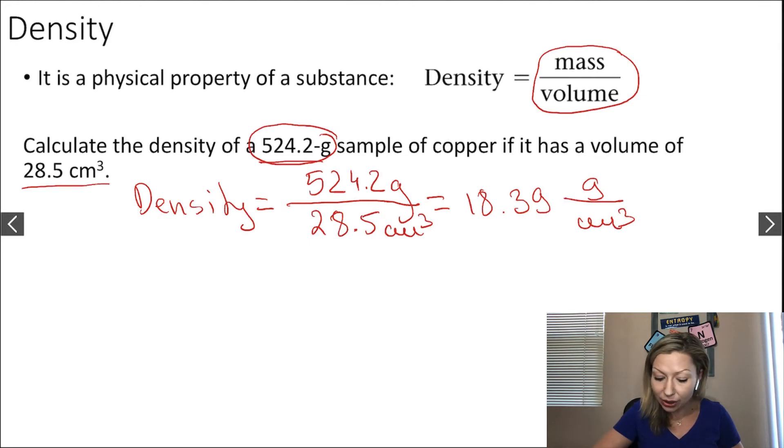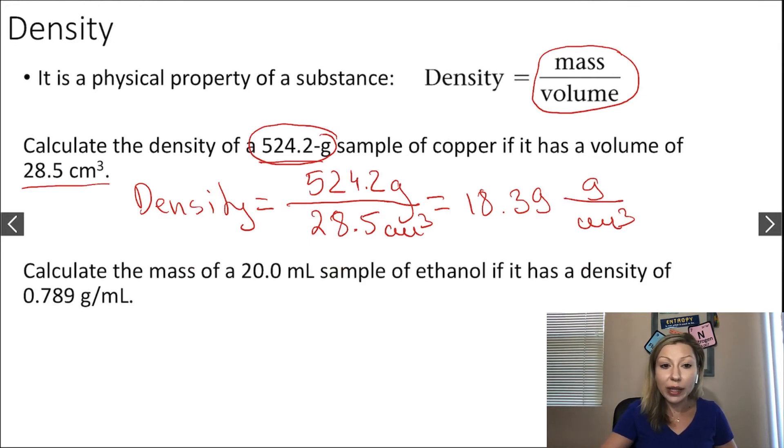Now let's look at another question. Calculate the mass of a 20.0 milliliter sample of ethanol if it has a density of 0.789 grams per milliliter. We're looking for the mass. What is the unit of mass in this case? What will be our final unit? It's grams, because in the density we see grams.